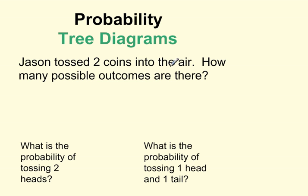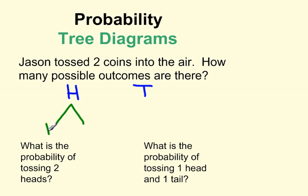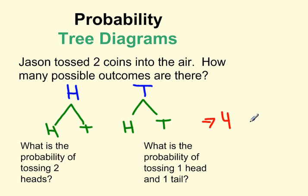Jason tossed two coins into the air. How many possible outcomes are there? If we were to draw a tree diagram, we would start with the first coin, which if tossed could end up as heads or tails. The second coin he tossed could also land heads or tails. So this is our tree diagram. If we count along the bottom of our branches, we have four possible outcomes.